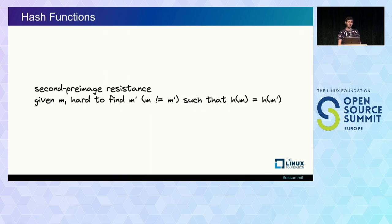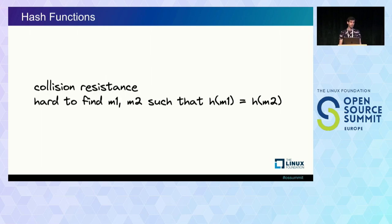The second property is second pre-image resistance. Whereas previously we fixed the digest, in this case we fix the message. Given m, some message, it's hard to find a different message m' such that hash(m) = hash(m'). Closely related is collision resistance, which states that it's hard to find any two arbitrary messages m1 and m2 such that their digests are equal. It's worth noting that collision resistance implies second pre-image resistance — if I can't find any two arbitrary messages with equal digests, I won't be able to when I fix one of those values.